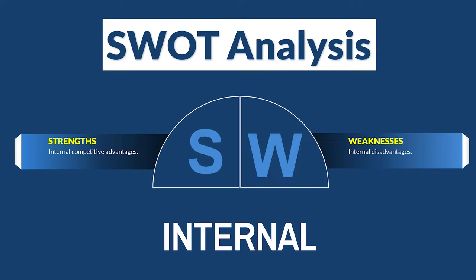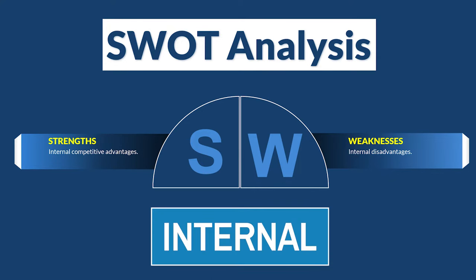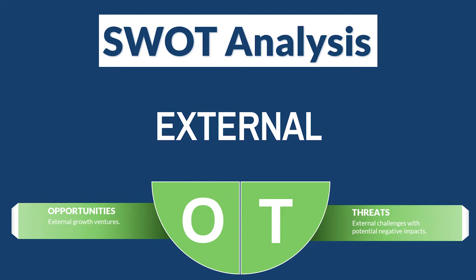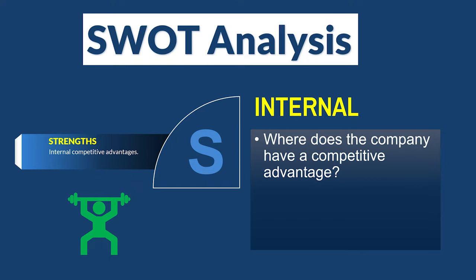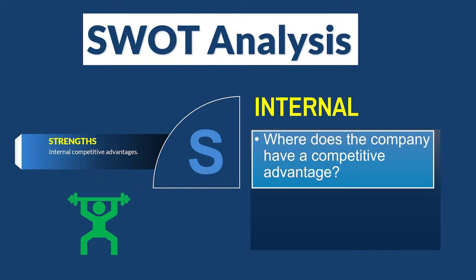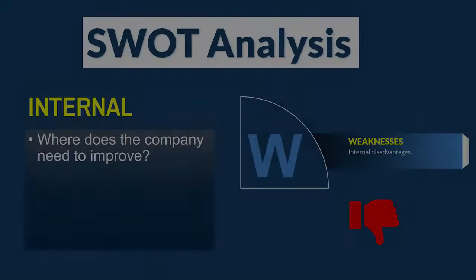Strengths and weaknesses are internal, or inside the organization. Opportunities and threats are external, or outside of the organization. When looking at strengths, you should only be thinking about things inside your organization. Your talent could be a strength. What are your core competencies? What advantages does your organization offer that competitors do not? Are you able to produce at a much lower cost than other organizations? These are things to think about when it comes to strengths.